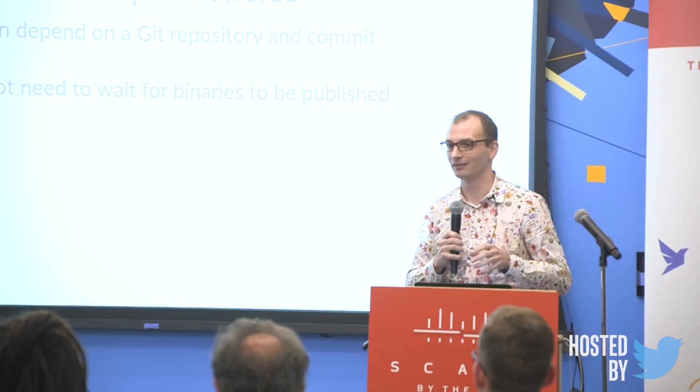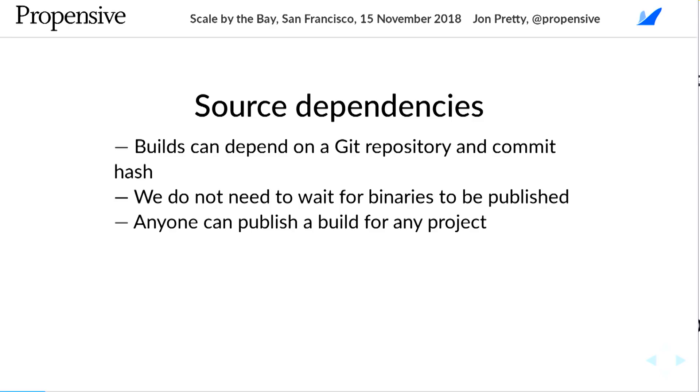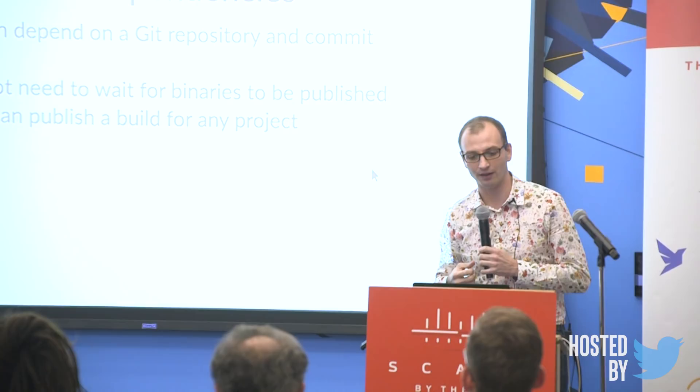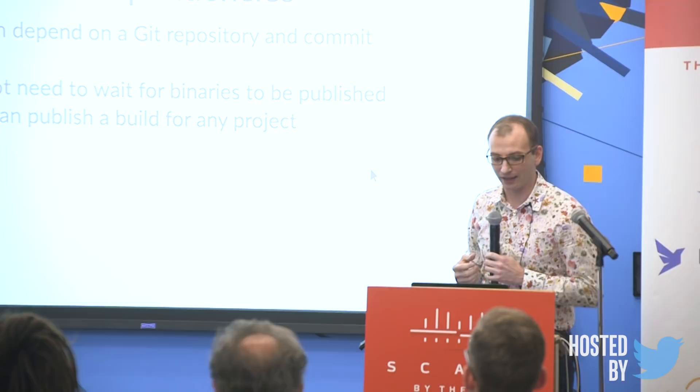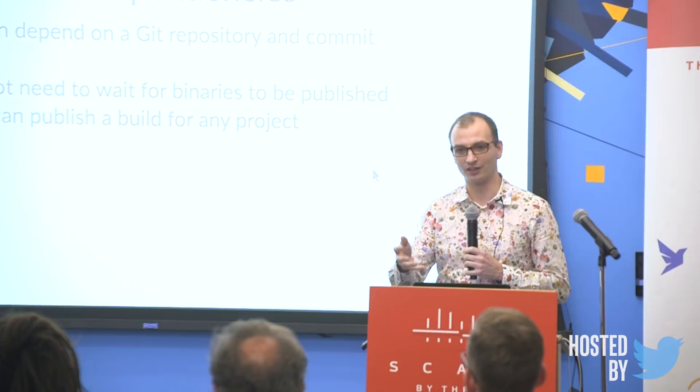That seems quite dangerous. With source dependencies, we never separate the binaries from the sources, so the compiler will check whether things compile. We never have a situation where we're trying to run code that might not link — where we might get a NoSuchMethodError or ClassNotFoundException. We don't have to wait for binaries to be published; we can just grab the sources, or Fury can grab the sources on your behalf.